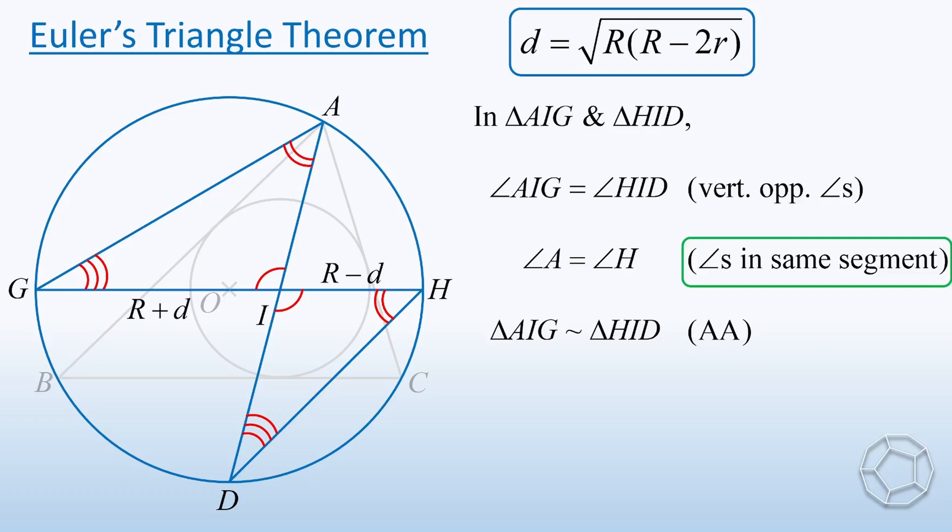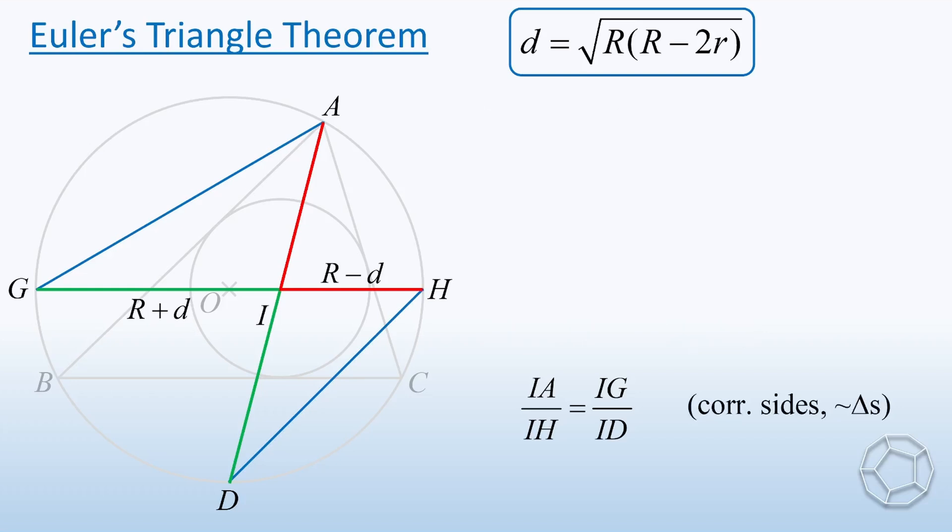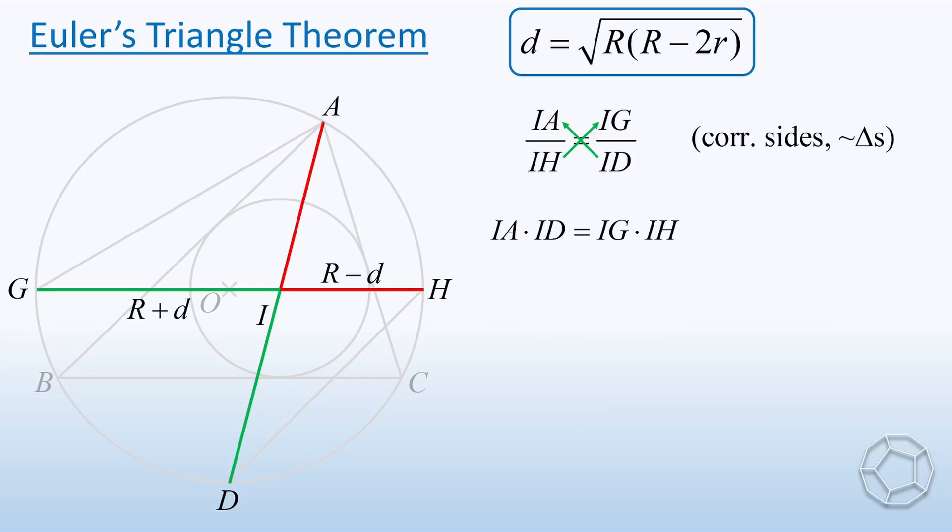Alright, why do we need similar triangles? Because we can get the relation about lengths. Here, the ratio IA over IH is equal to IG over ID because of corresponding sides similar triangles. Let's do some algebra here. Cross multiply the equation to get IA times ID is equal to IG times IH.